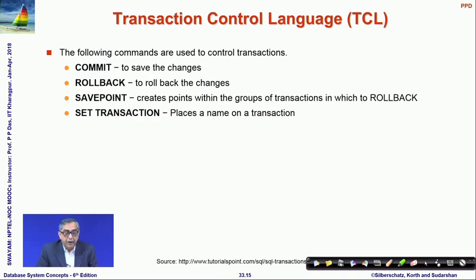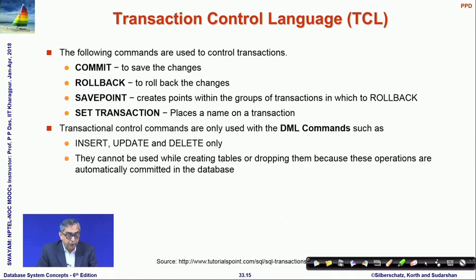For explicit transaction control, SQL provides the Transaction Control Language (TCL) with instructions: commit to save changes, rollback to undo changes, and savepoint to mark points within a transaction. You can also set a transaction name and its behavior. These TCL commands are used with specific DML commands — they are meaningful only for insert, update, and delete operations, not for select or DDL statements.